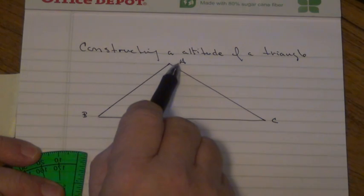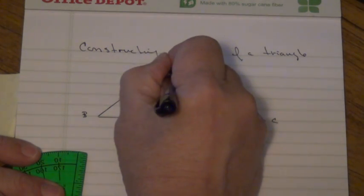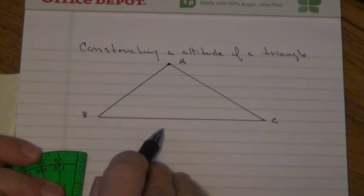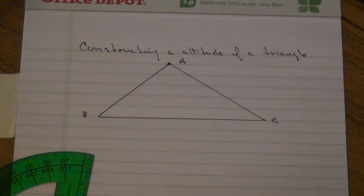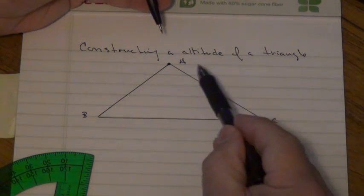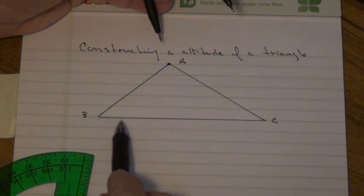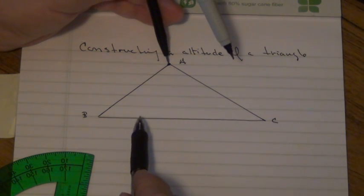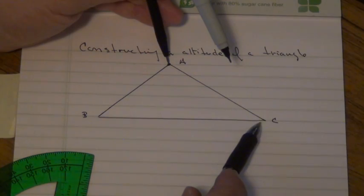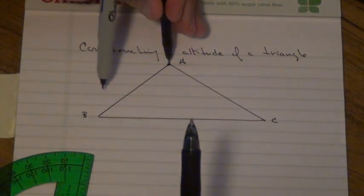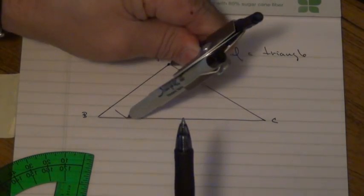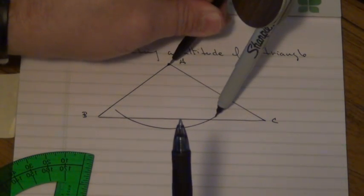But we're just going to draw the altitude from point A to side B. So what you need to do is draw an arc from point A so it touches C in two places. I'm going to draw this arc here, so here and there.